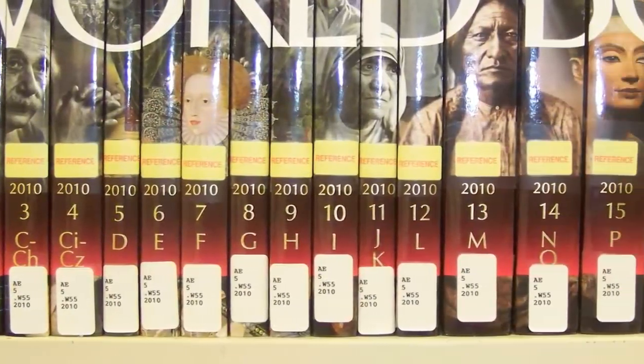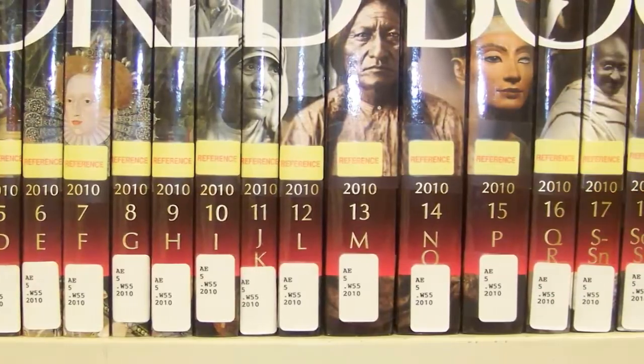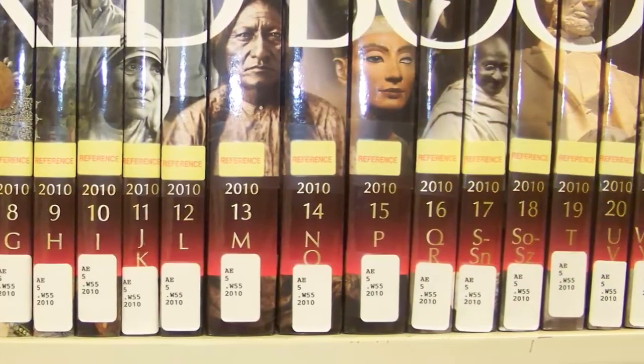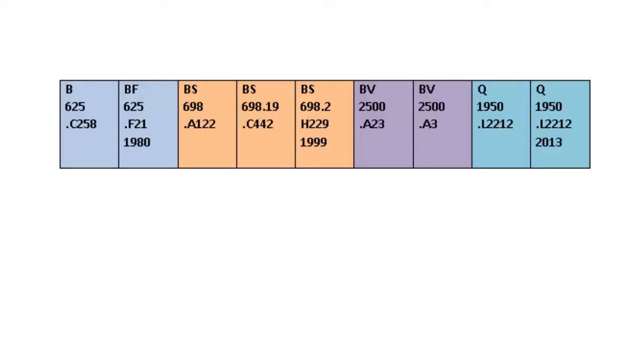Call numbers are used to shelve and locate books within these LC subject areas. Call numbers are read one line at a time. The first line of the call number can consist of one, two, or three letters and represents the subject category and subdivisions assigned to the item.